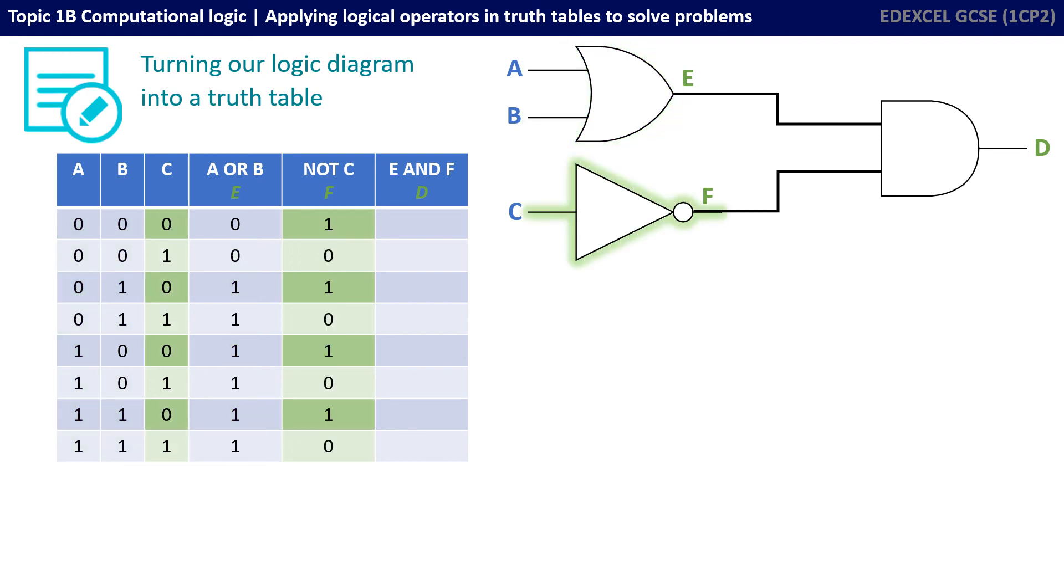Now, I'm dealing with the NOT gate. This only has one input, that's C, and it's dead easy. Whatever's in C is flipped and knotted to be F. So, the zeros become ones and the ones become zeros, and you can see I've done that there.